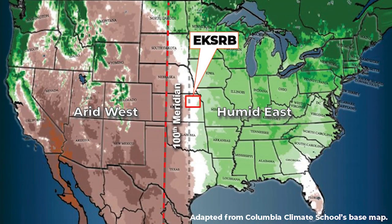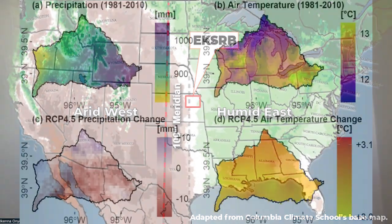As you may know, the Eastern Kansas River Basin is the basin of the Kansas River, which is positioned near the 100th meridian. The 100th meridian is the humid dividing line between the humid eastern and arid western United States. With increasing atmospheric gases like CO2, mean air temperature and precipitation have been projected to increase and decline, respectively, in the region.